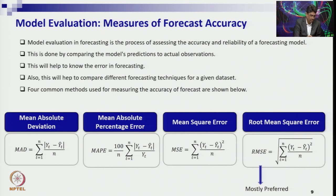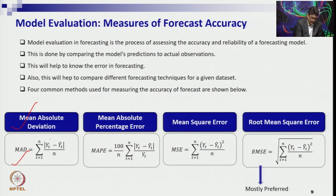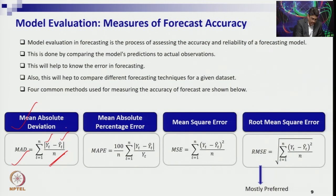The first one is Mean Absolute Deviation. It is the difference between the actual data and the forecast data — you take the absolute values of all those errors, the residual parts, and then take their average. That is called the Mean Absolute Deviation.